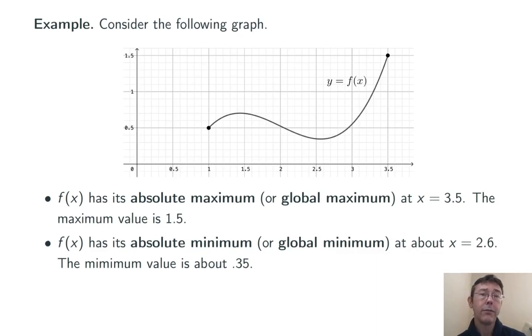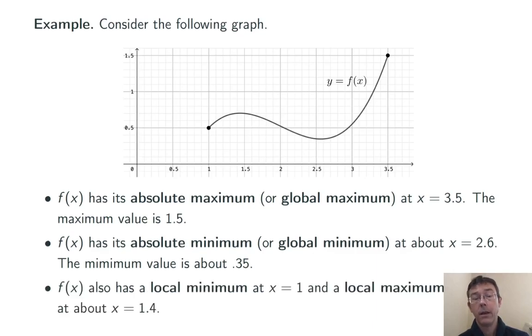Similarly, we have an absolute or global minimum at about x equals 2.6, and the minimum value at that point is about 0.35. Now, looking at this graph, there's another sort of maximum and minimum that we can see. At x equals 1, we have what we call a local minimum.